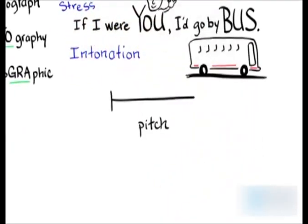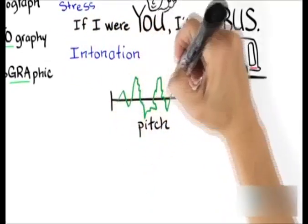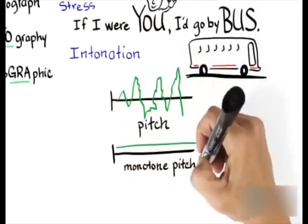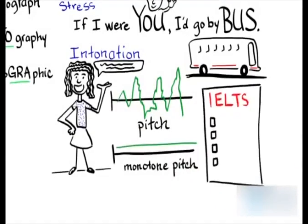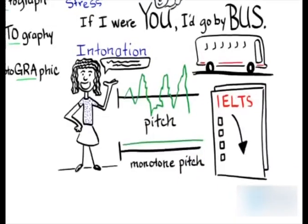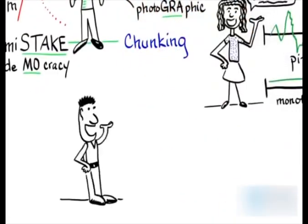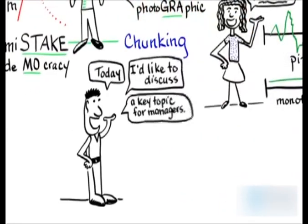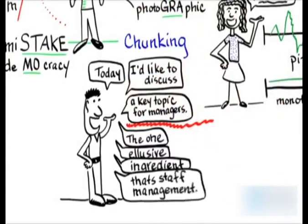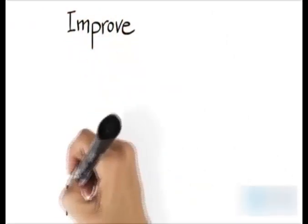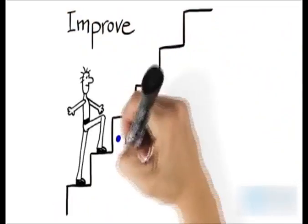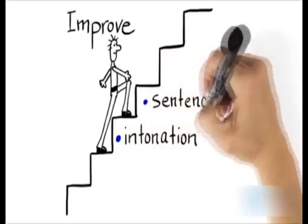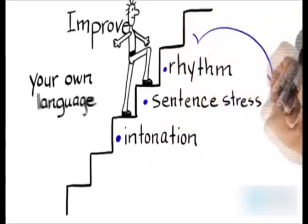Intonation is the pitch of your voice changing as you talk. Monotone intonation is typical of someone who has memorized long responses and may result in lower test scores. Chunking means talking in a rhythm which delivers chunks of words with short silences in between — good public speakers often use this skill. To improve pronunciation, find out how English intonation, sentence stress, and rhythm differ from your native language.